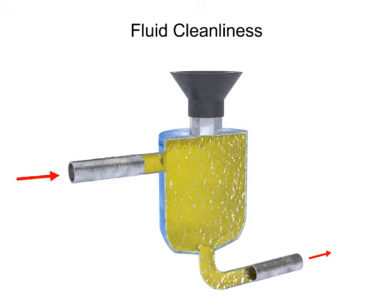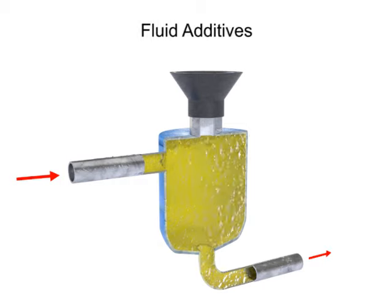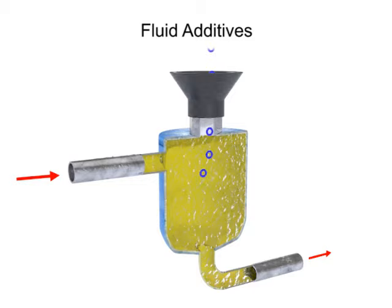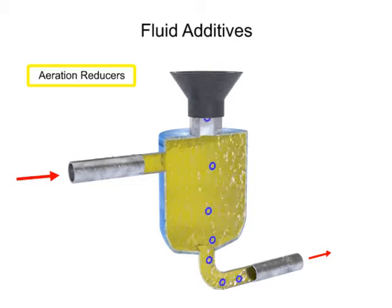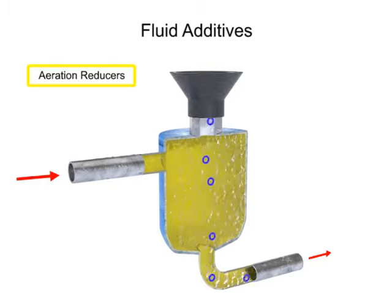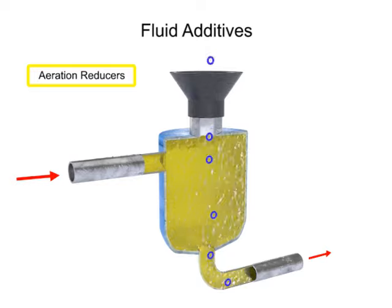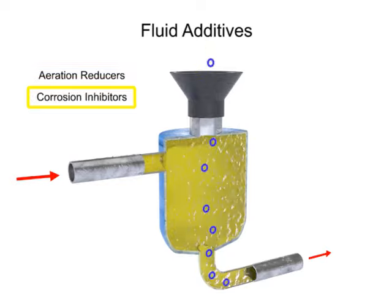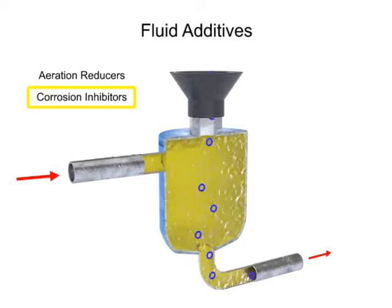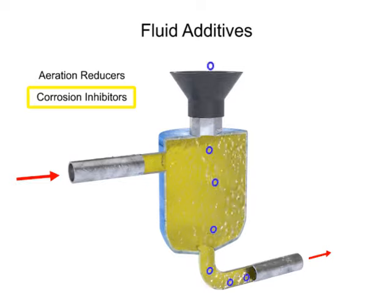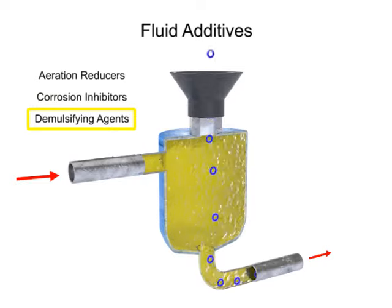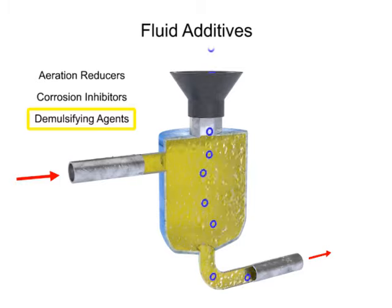Another factor common to hydraulic fluids is the use of additives. Additives can be used to reduce aeration and the production of bubbles as the fluid travels rapidly throughout the system. They can be used to administer corrosion inhibitors within the reservoir. And they can be used as a demulsifying agent, which helps the fluid resist mixing with water.